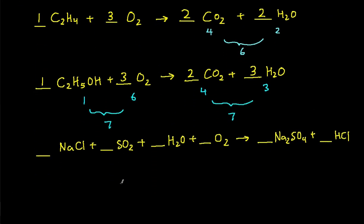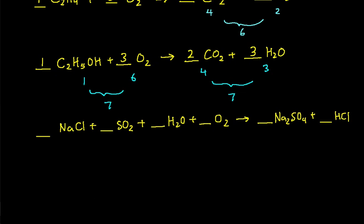Let's do one final example — a little more difficult, but you'll get it. We find the element appearing in only one reactant and one product. Let's start with sodium. Sodium is only in this reactant and only in this product. We have two sodiums here and one sodium here, so we put a coefficient of two and a coefficient of one. Because we put two here, we now have two chlorines, so we change the chlorines on the other side — we currently have one Cl, so we need a two there. We have two hydrogens on each side, so let's put a coefficient of one there.